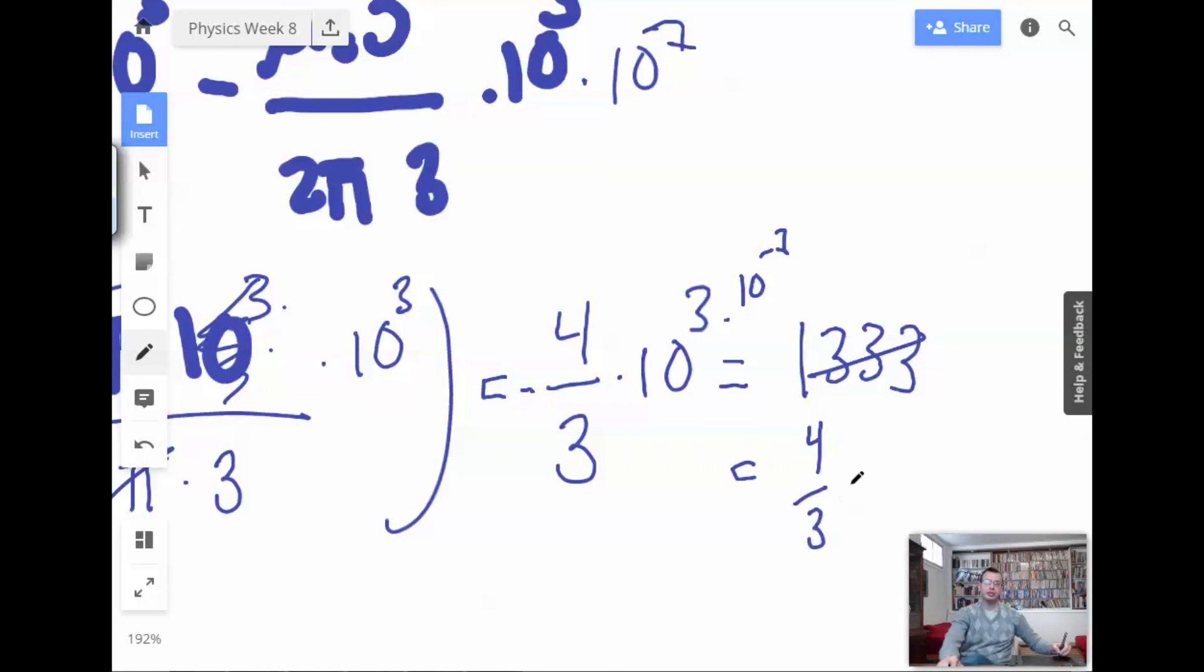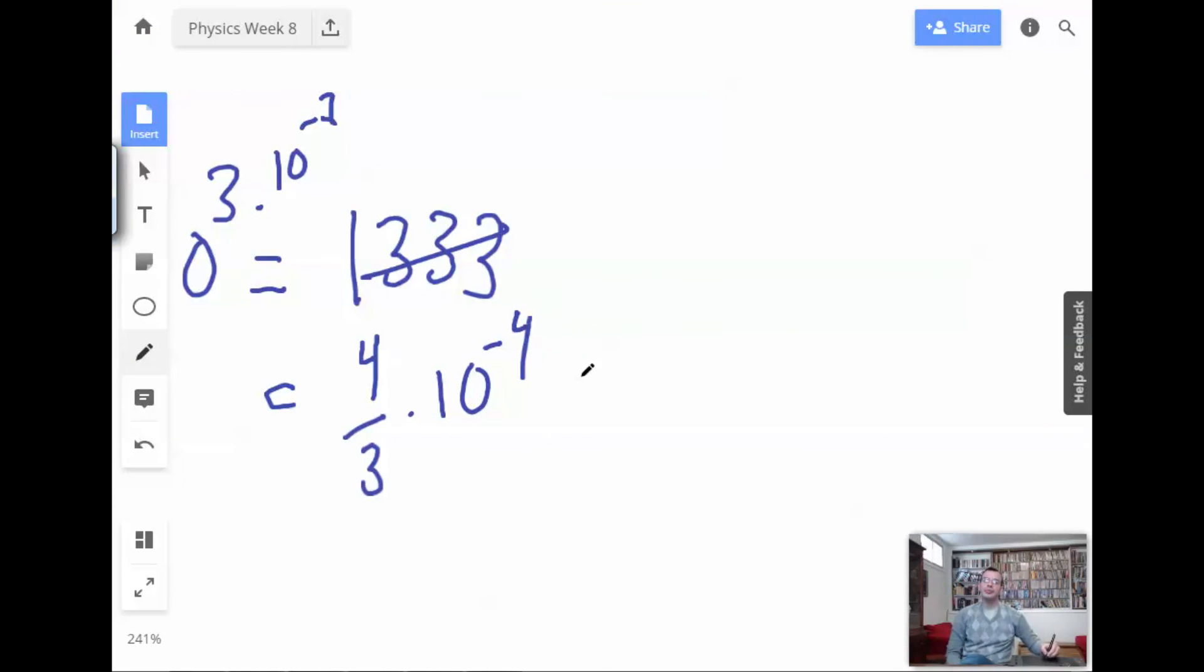4/3 times ten. Three plus negative seven is negative four. But then we need to convert that into micro. And this will be Teslas, which is times ten, negative six. Negative four plus six is two, which equals 133. One hundred and thirty-three. And I still have a negative sign in there. Micro Teslas.